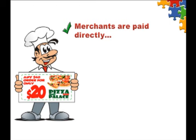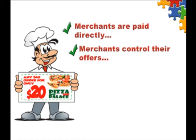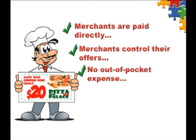So merchants are in control of their offers. They can even run multiple offers to advertise specials and seasonal deals with no out-of-pocket expense. They get paid at point of sale, so there is no waiting for their money. And the Ugoof fee of 25% is far less than the 40% to 50% fee charged by other group discount buying services.